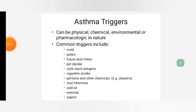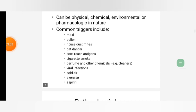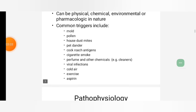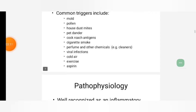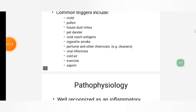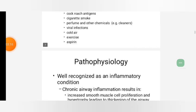Inhalation triggers can be physical, chemical, environmental or pharmacologic in nature. Common triggers include mold, pollen, house dust, mites, pet dander, cockroach antigens, cigarette smoke, perfume and other chemicals — for example, cleaners — viral infections, cold air, exercise, and aspirin.